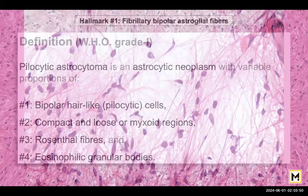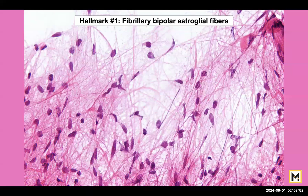The best way to visualize the fibrillary bipolar astrocytic fibers is by making a crush preparation or cytology, where you can very easily see the glial fibers or the hair-like processes and you can see the bipolar astrocytic pilocytic cells. So it's very easy to make a diagnosis on cytology.